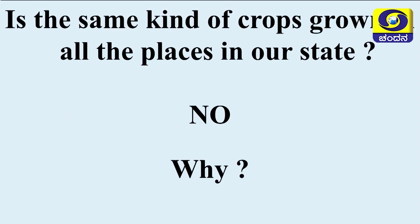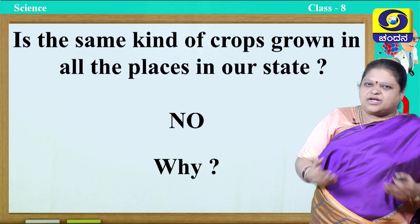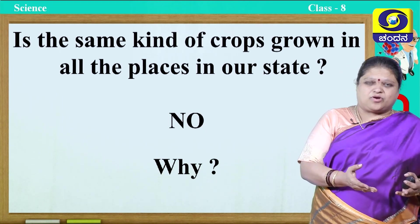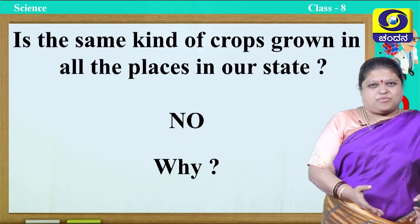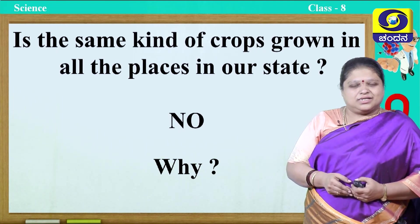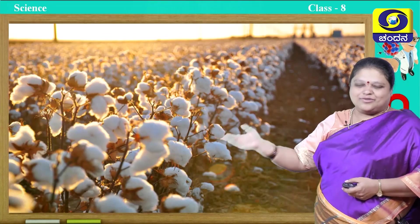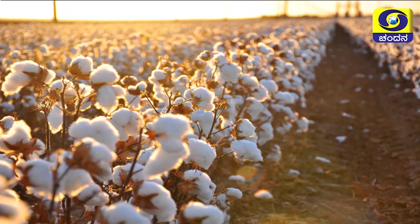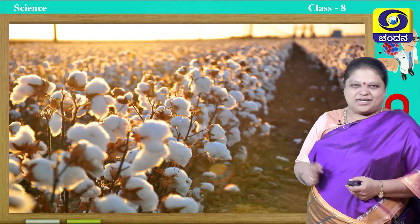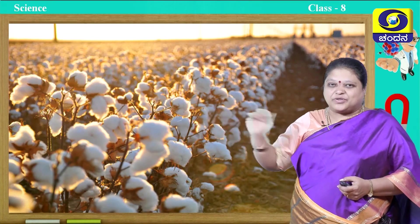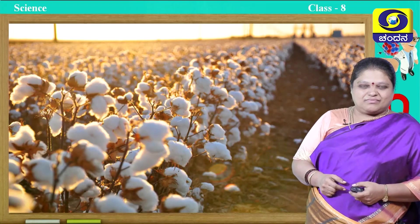You understood what a crop is. Now my question is: is the same kind of crop grown in all the places in our state? If I am growing cotton in Ramnagara, will I grow cotton only in Ballari in the same season? No. Why? What may be the reason? Here you see a picture of cotton crop growing. Cotton crop cannot grow in all places — it requires black soil and some specific climatic conditions which are very essential for it to grow. For example, it can be grown in the rainy season; other seasons it is very difficult to grow it.